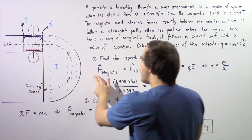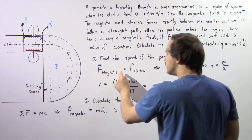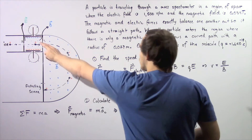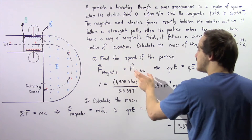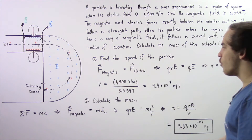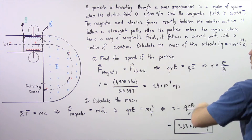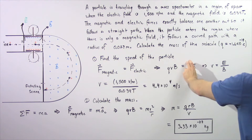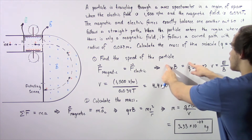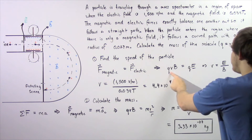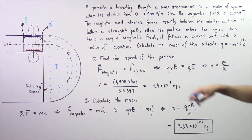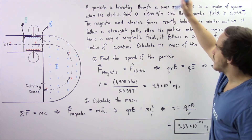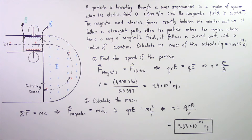In the first region of space, the magnitude of the magnetic force is equal to the magnitude of the electric force. So QvB equals QE. The Q's cancel on both sides, and the velocity V is equal to E divided by B. So the velocity equals 1,500 volts per meter divided by 0.034 Tesla, which gives us about 4.4 times 10 to the 4 meters per second.